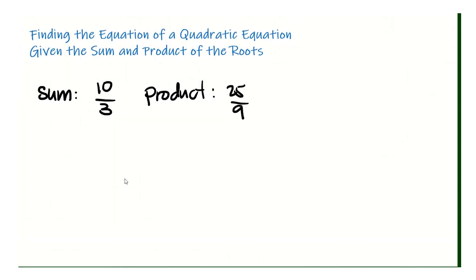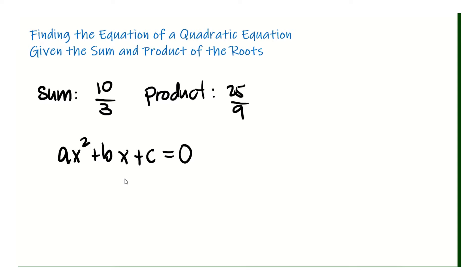Let's say the sum is 10 over 3 and the product is 25 over 9. So what we're looking for is ax squared plus bx plus c equal to 0.